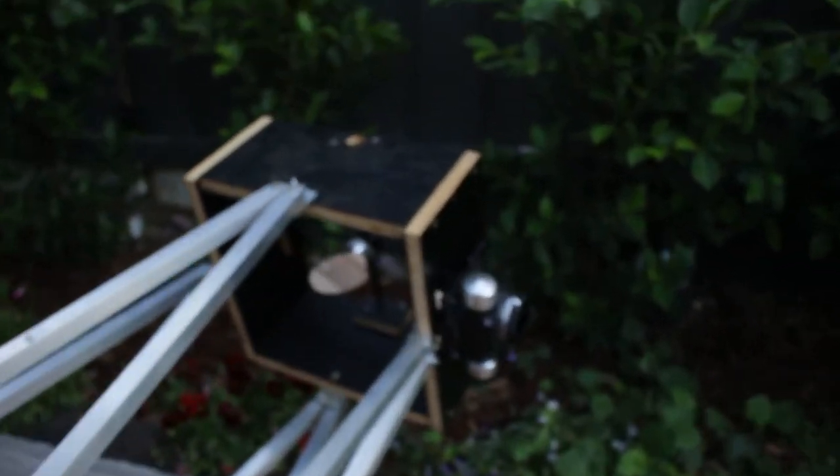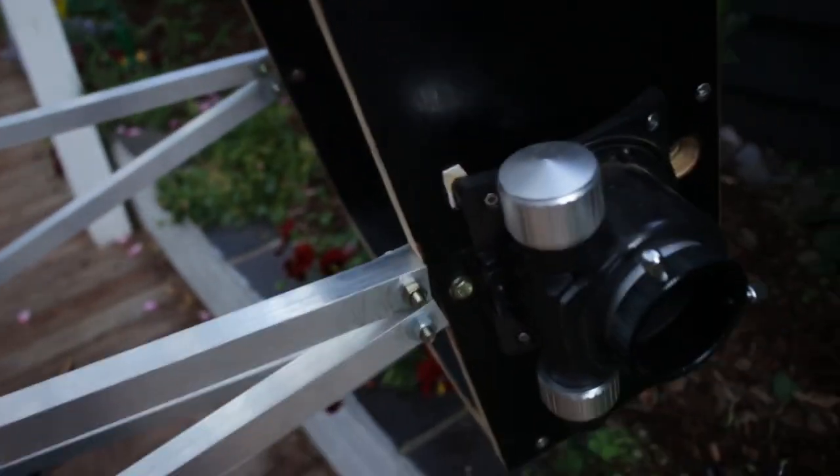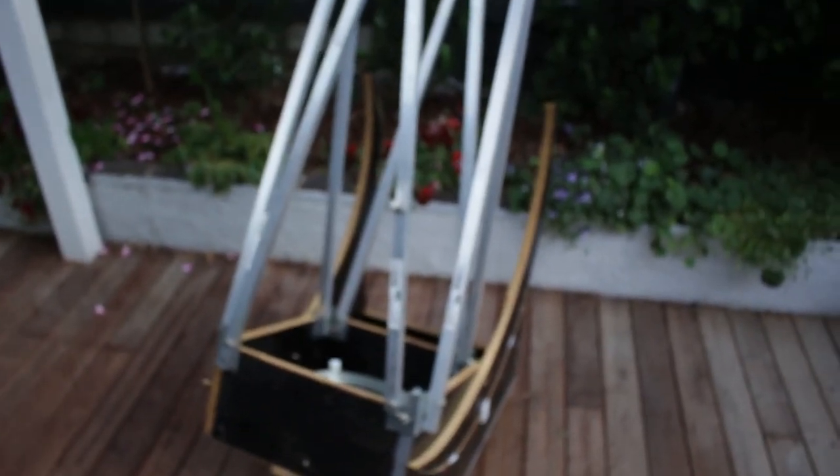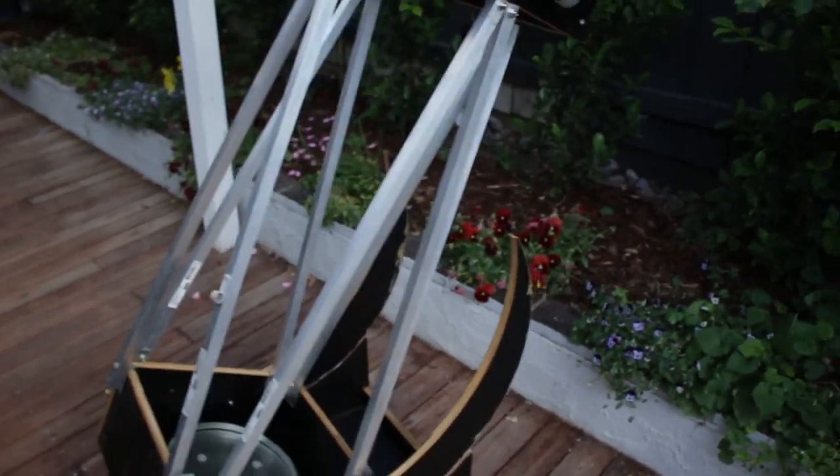From there, you can also collimate the secondary mirror using screws on this side. All that comes together to form a focused image when you put an eyepiece in this focuser. And you may ask, what's up with this truss structure?